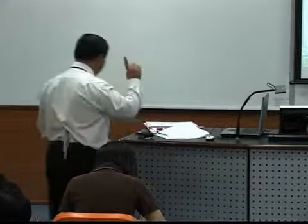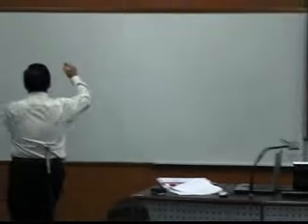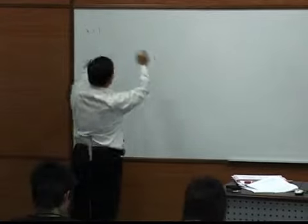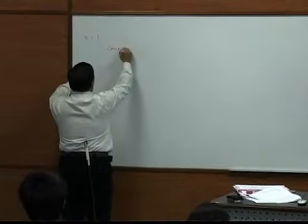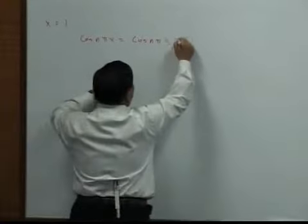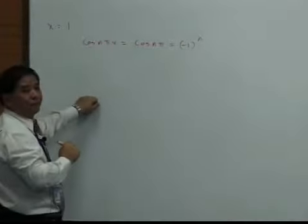Equals to 1. If you choose x equals to 1, what will you get? You will get the cosine nπx to be cosine nπ, and this will give me negative 1 power n. See that?